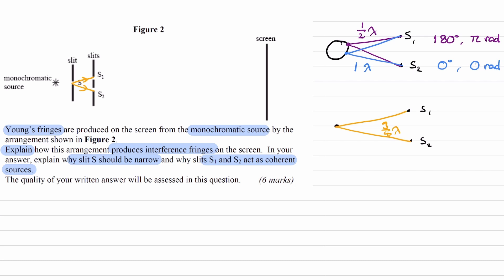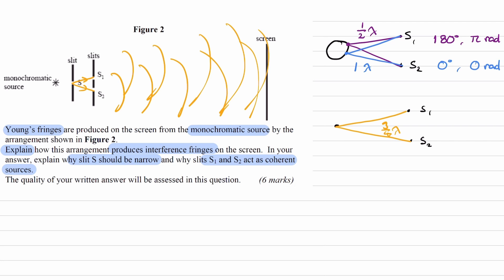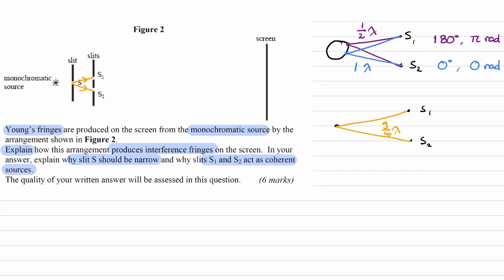That answers why S should be narrow and why S1 and S2 act as coherent sources. Now for how the arrangement produces interference fringes on the screen: when light passes through S1 and S2, it diffracts — it spreads out. Light from S1 spreads out and reaches multiple points along the screen, and the same happens for S2. The light from the two slits superposes, or interferes, on the screen, producing constructive and destructive interference.